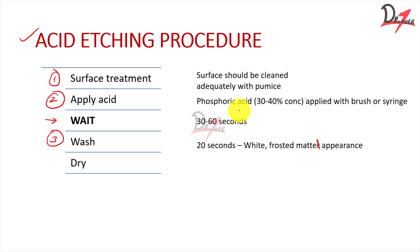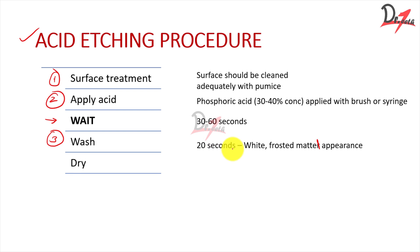We have to keep in mind that etching cannot continue too long. If you allow the acid to stay too long, the dissolved apatite will re-precipitate as phosphate onto the etched surface, which will impact our bond again. So we apply the acid at 30 to 40% concentration, wait 30 to 60 seconds, then wash for 20 seconds to get the white frosted matte appearance.